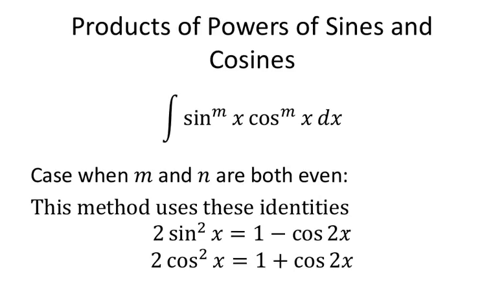Products of powers of sines and cosines: the case when m and n are both even. You can use double angle identities: 2 times sine squared of x equals 1 minus cosine 2x, or 2 cosine squared of x equals 1 plus cosine of 2x. Notice how it reduces the degree from cosine squared down to cosine to the first.